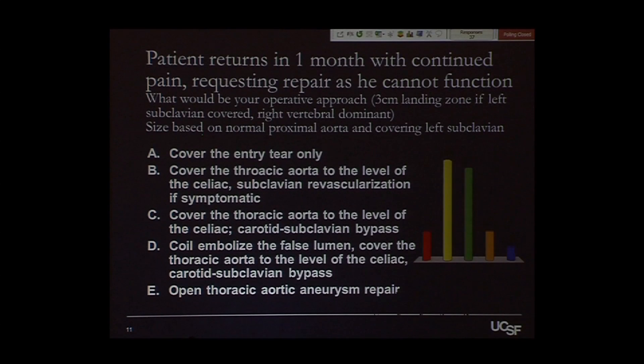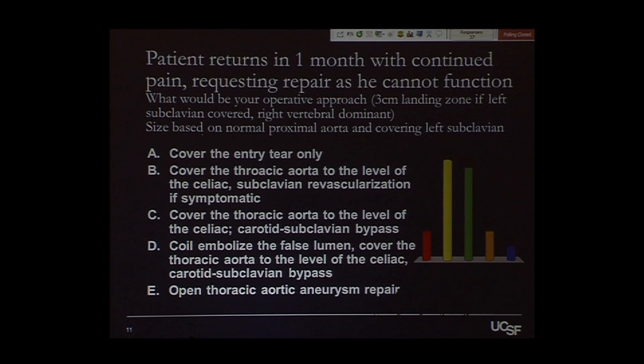Five percent would do an open repair. Option B — cover the thoracic aorta to the level of the celiac with subclavian revascularization — had strong support. Dr. Paniton, how would you manage this? Initially this patient appeared to be an acute type B, and medical treatment was appropriate. I do a pre-discharge CTA before letting the patient go. Now in the subacute or chronic phase — always a gray zone — I would clearly pick C: cover to the celiac with carotid subclavian bypass. In chronic dissection, you should not sacrifice a subclavian artery in someone with type B dissection involving the paravisceral and infrarenal aorta.